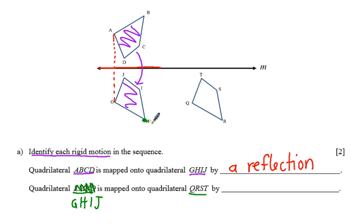And it looks as though we could map that figure onto the other one by a translation along the vector from H to R. And we'll just write a translation.